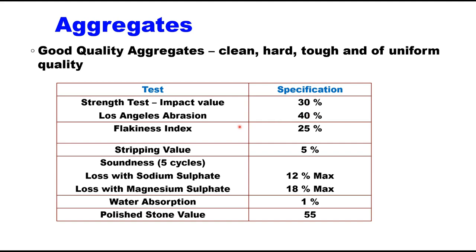Flakiness index of the aggregate should not be more than 35%. Stripping value should not be more than 5%, meaning 95% coating should remain. Water absorption is limited to 1% only. The soundness test is conducted only when aggregates fail in water absorption. The polished stone value is suggested to be 55.